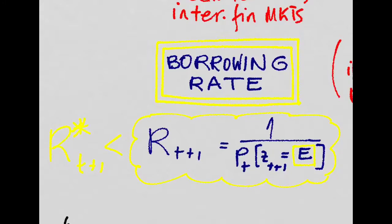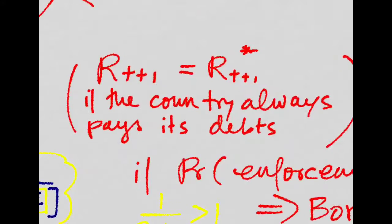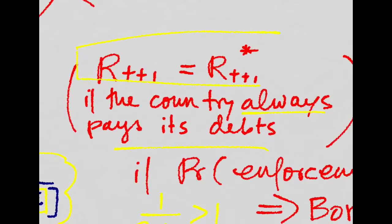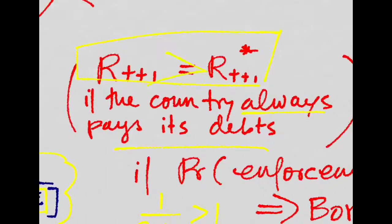Basically, because there is a risk that we are not solvent and that we end up defaulting. If this wasn't true, if we always repay our debts, both the lending and the borrowing rate would be equal. But since there is a possibility that we default, we have to pay more if we want to get money.